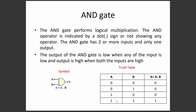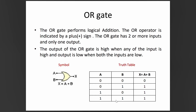The OR gate performs logical addition, and the OR operator is the plus sign. With inputs A and B, the output is X = A + B. There are four combinations: 00, 01, 10, 11. Logical addition gives: 0+0=0, 0+1=1, 1+0=1, 1+1=1. The output is low when both inputs are low, and high when any one input is high.